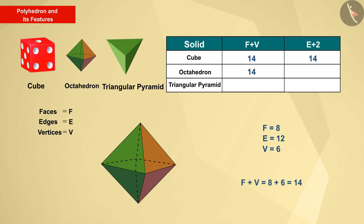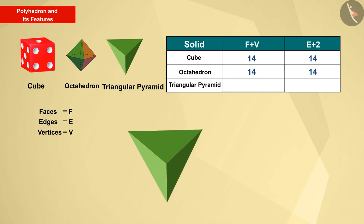Now let's help Payal. As we can see, the pyramid has four faces, six edges and four vertices. The sum of F and V is 8, the sum of E and 2 is also 8.